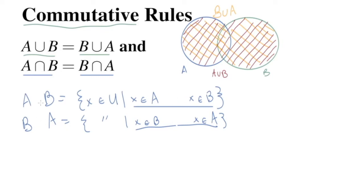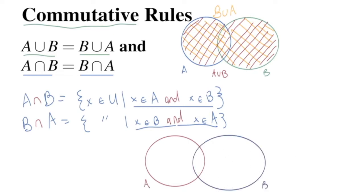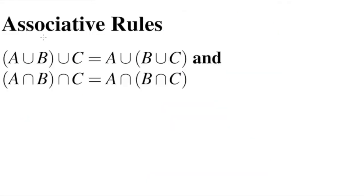Now let's look at intersection. A intersect B and B intersect A are the set of things in the universe such that x is in A and x is in B, or x is in B and x is in A. The definition of intersection is the overlap. A intersect B is the area where the two sets overlap, and B intersect A is the area where B and A overlap - which is exactly the same area. So union and intersection are symmetrical operators.